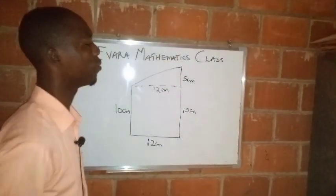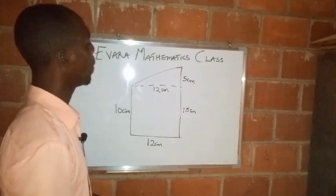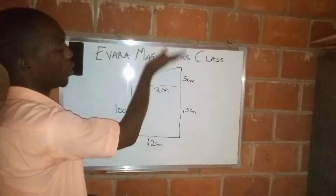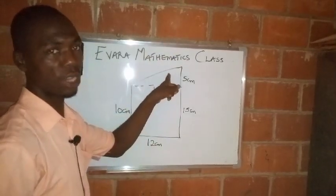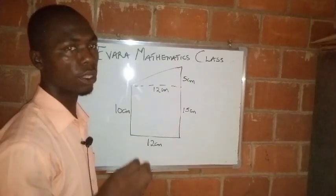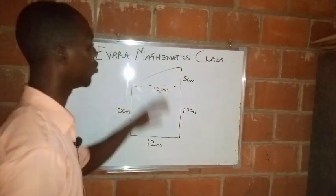This distance here will be 5 centimeters. For us to get this side now, we can see that at the upper part here we have a right angle triangle.